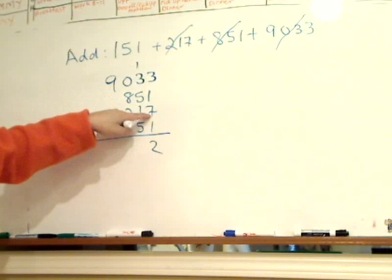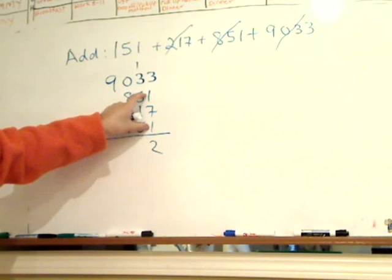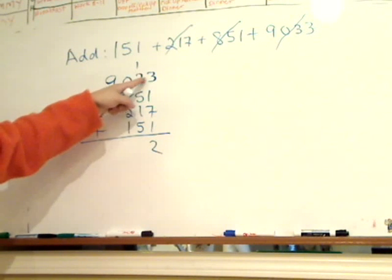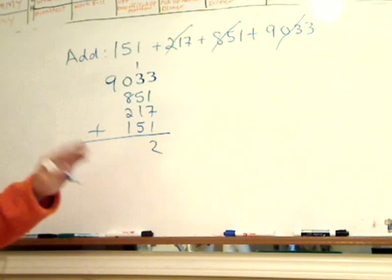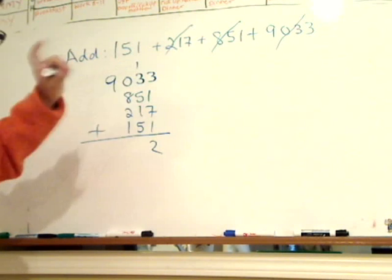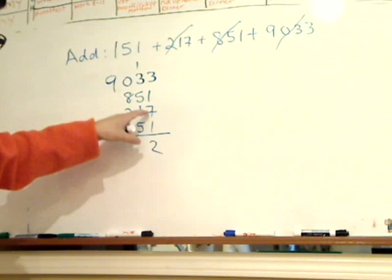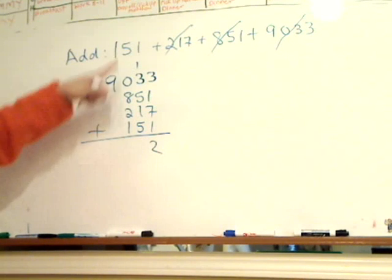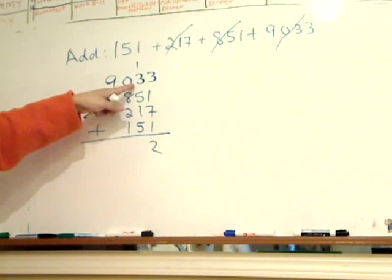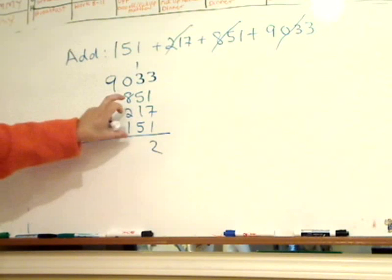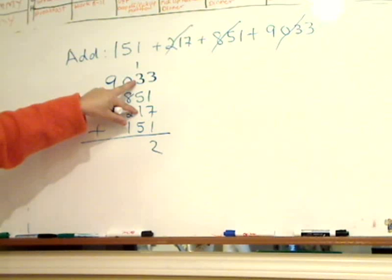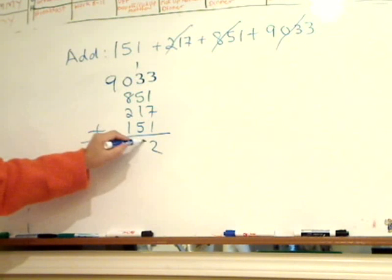Instead of going 3 plus 1 plus 7 plus 1, it takes a bit longer. So if you can see it right away, the pattern, 3 plus 7 is 10, plus 1 plus 1 is 12. So carry the 1 into the tens column. So 1 plus 3 is—again, see, I look for the pattern: 5 plus 5 is 10, plus 3 plus 1 plus 1 is 15.